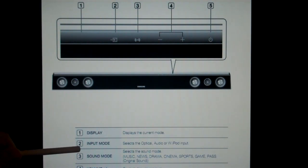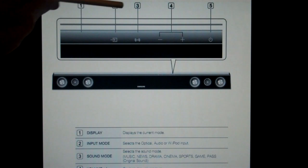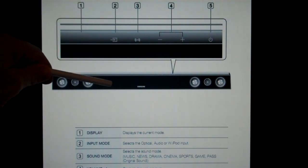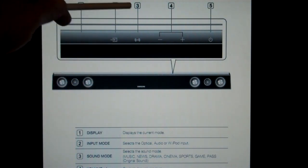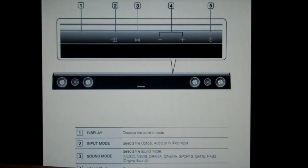Number 2 displays the input, so you can select one of 4 inputs: one RCA audio input, two optical inputs, and an optional iPad dock. Number 3 is your sound mode. Depending on whether you're listening to music, news, something dramatic, a sports game, or something to that effect, using number 3 on the face of the soundbar, you can control the type of sound field being produced.